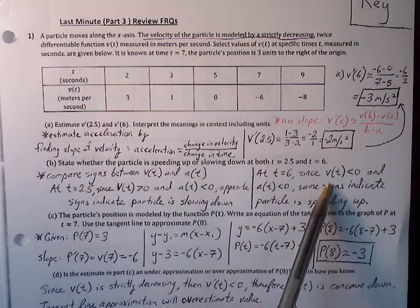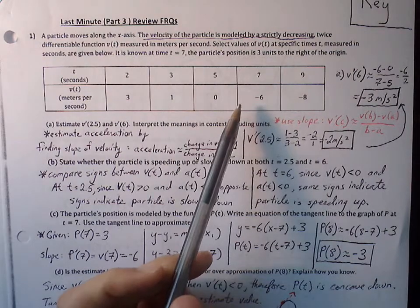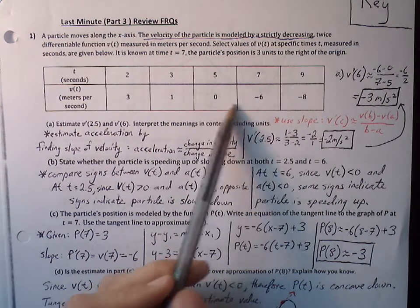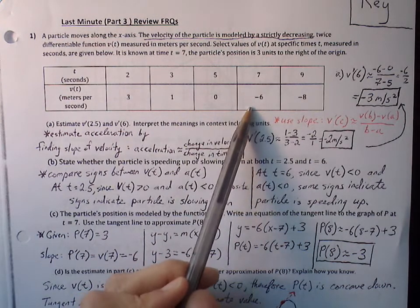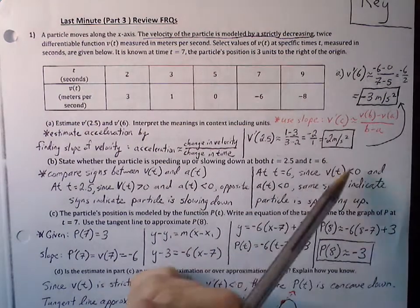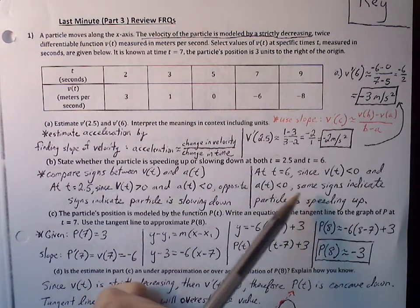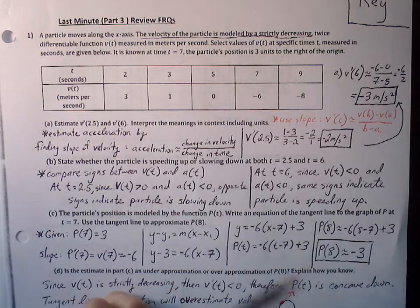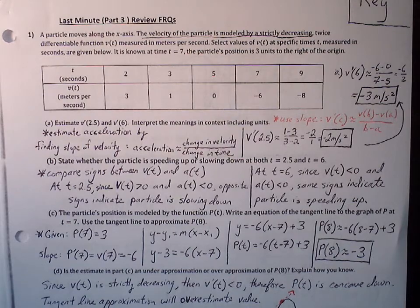At t equals 6, between the velocity values 0 and negative 6, our velocity is dipping into the negative region — so velocity is negative. But acceleration is also negative. Because velocity and acceleration are both negative — the same sign — we know the particle must be speeding up at t equals 6.